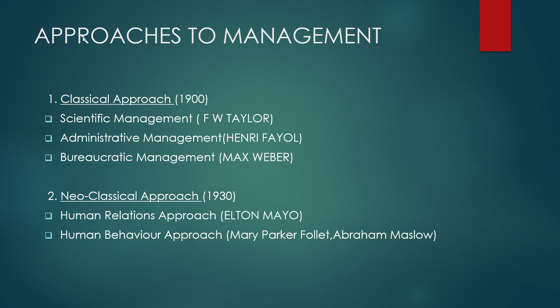Next are the approaches to management. The first is the classical approach, started around the year 1900. Under this approach, more importance is given to production instead of manpower, and it believes that the employee is motivated by economic incentives. This approach has three branches: scientific management, administrative management, and bureaucratic management.